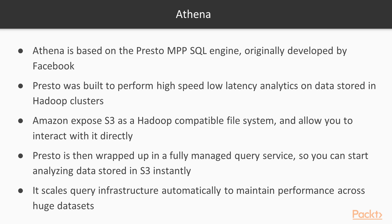Amazon Athena is based on the Presto SQL engine, which is a massively parallel processing engine originally developed at Facebook. Presto was built to perform really high-speed, low-latency analytics on data stored in Hadoop. Hadoop has a reputation in the industry for being very slow but being the only framework capable of processing large amounts of data. Over the last few years, a number of alternatives have arisen to the typical MapReduce paradigm. This started with a technology called Hive, also developed by Facebook, which translates SQL queries into MapReduce jobs. The problem is MapReduce is a batch-based system and is quite slow.